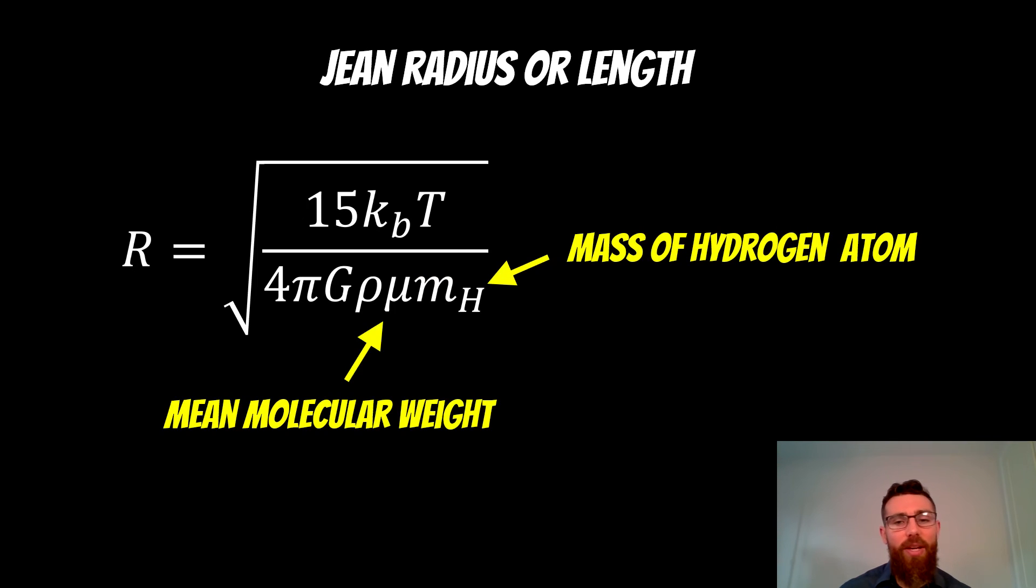In our final expression here, your m_H is your mass of your hydrogen atom, and your mu is your mean molecular weight. Everything else is going to be, your k_B is your Boltzmann constant, and we know the temperature.